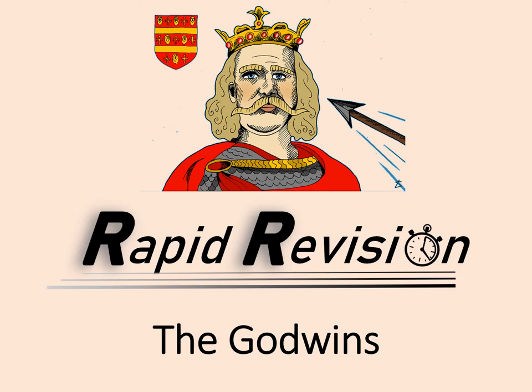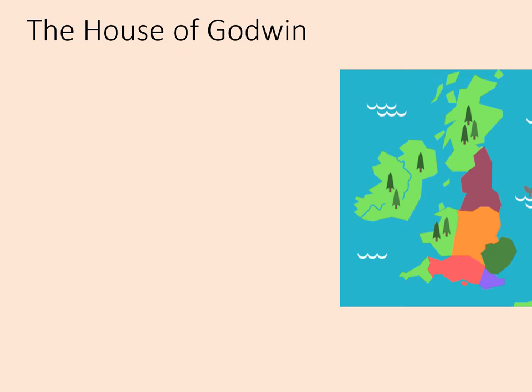Welcome to this rapid revision session on the Godwins, or at least the House of Godwin. At this time England was split up into several large earldoms, each led by an earl. The earls would enforce the law as set out by the king in each of their earldoms. Effectively, this helped the king to govern the whole country at a time when communication was so slow and difficult.